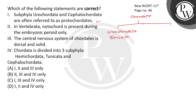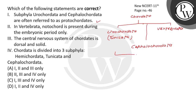The three subphyla of Chordata are: Tunicata, Cephalochordata, and Vertebrata. Among these, Urochordata and Cephalochordata are referred to as protochordates.